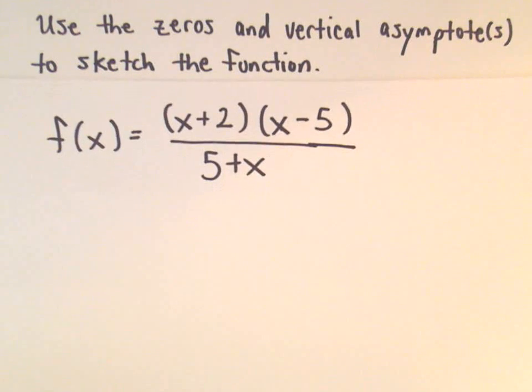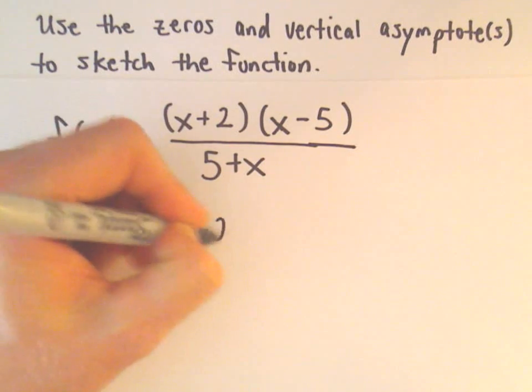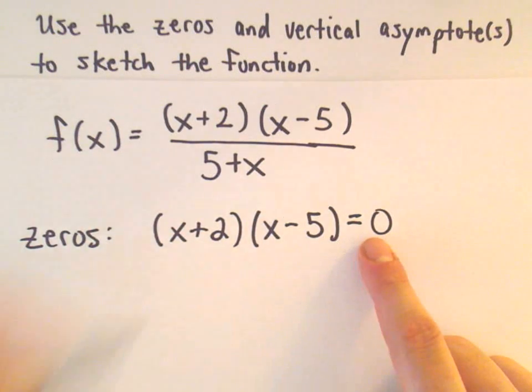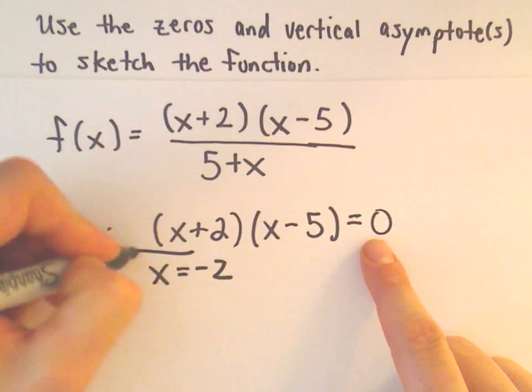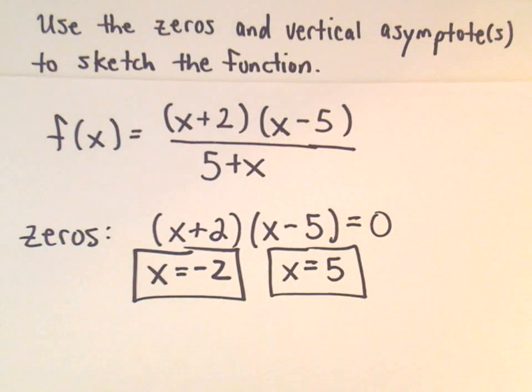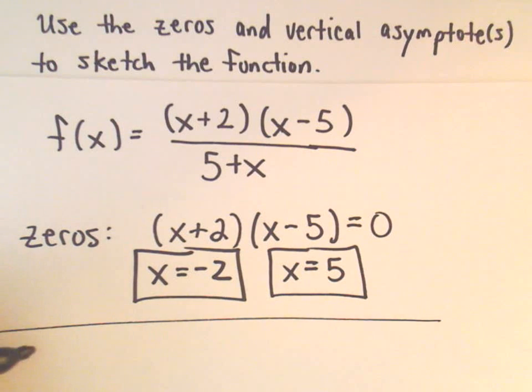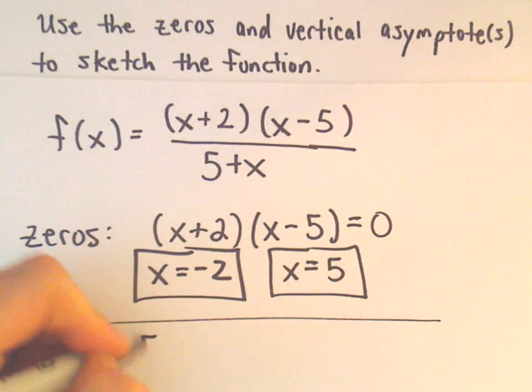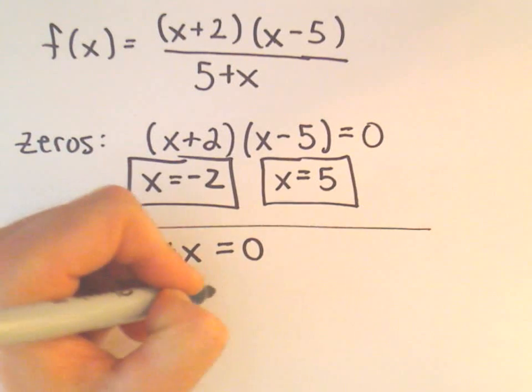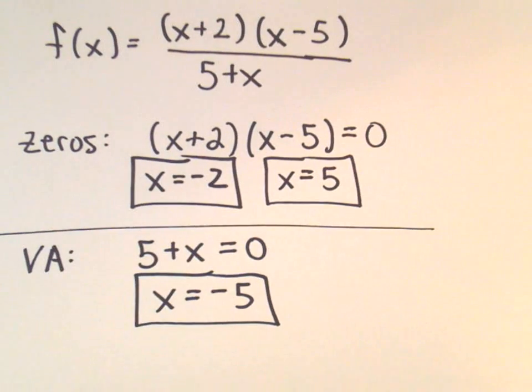Okay, so in this case, I'm asking myself now, are there any common factors that we can eliminate? And the answer is no. So to figure out the zeros, we'll take the numerator and set that equal to 0. If we set each factor equal to 0, we'll get x equals negative 2 will be a zero from our first factor. And then to figure out the vertical asymptote, we'll take the denominator and set that equal to 0. In this case, I can subtract 5 from both sides. And now I've got my vertical asymptote.